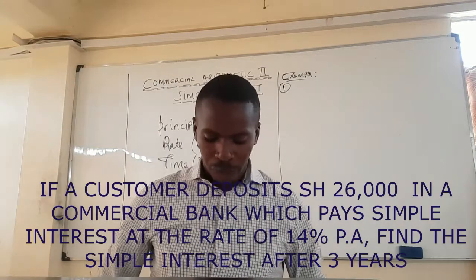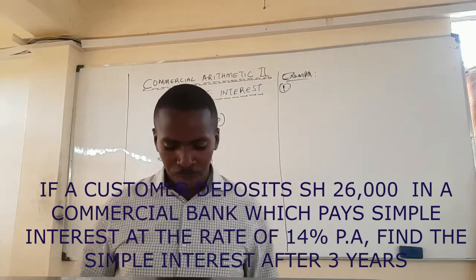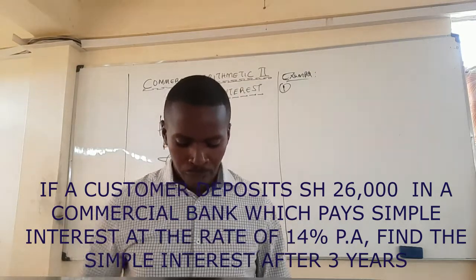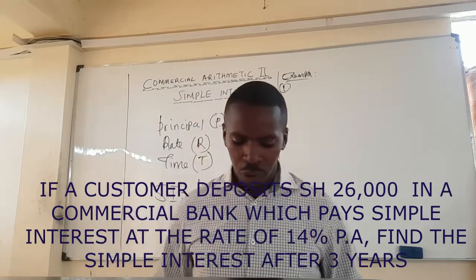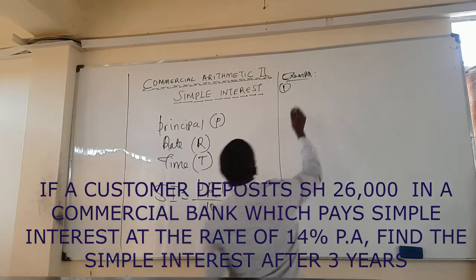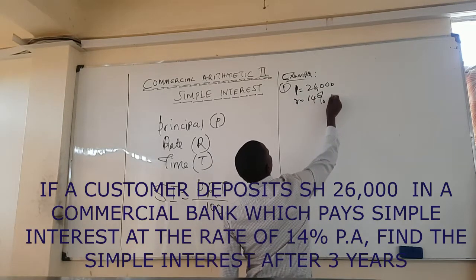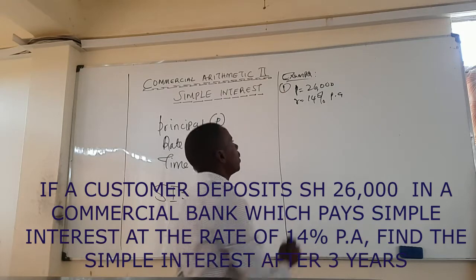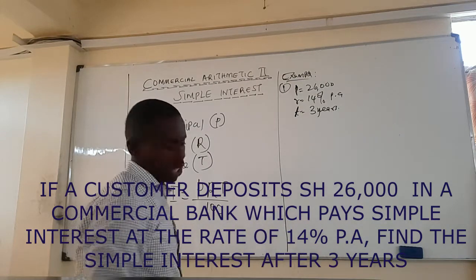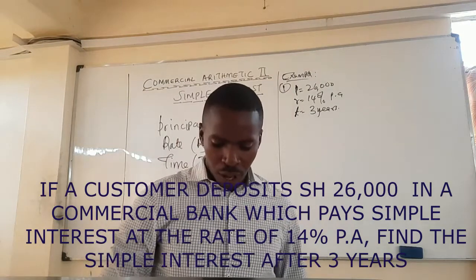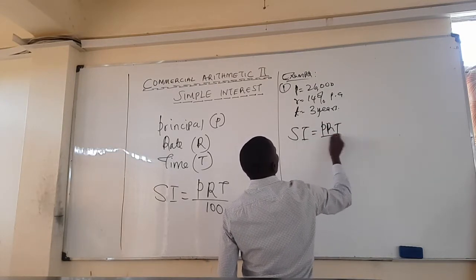Example 1: If a customer deposited 26,000 in a commercial bank which pays simple interest at the rate of 14% per annum after three years. Here the principal is 26,000, the rate is 14% per annum, and the time is three years. We want to get the simple interest. The formula is SI = PRT over 100.